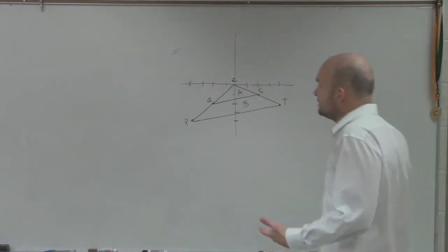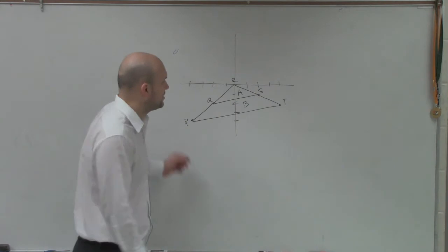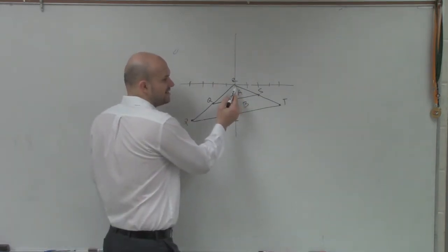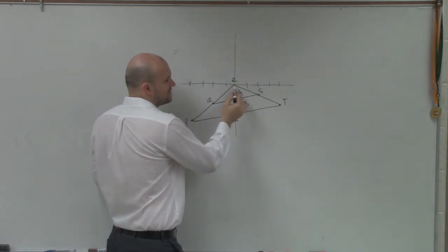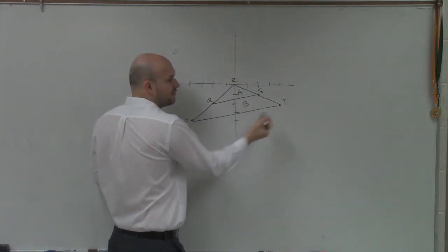So all I need to do is really determine what are the lengths of these sides. Well, I can see that here, I'm going rs. So to go to rs, I have to go down 1 over 2, right? To get to rt, you have to go down 2 and then over 4.